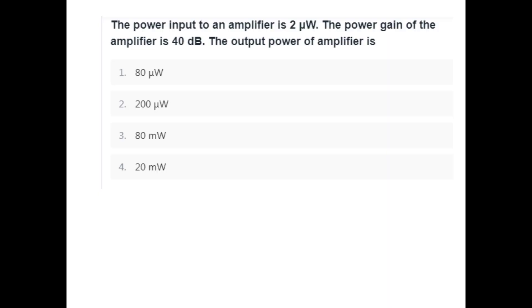First question. The power input to an amplifier is 2μW. The power gain of the amplifier is 40dB. Find the output power.